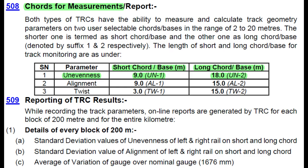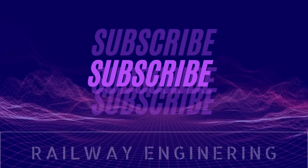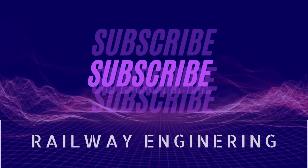But in TRC recording, there are two types of cards for measuring unevenness: short card is 9 meters and long card is 18 meters. Thank you friends for watching this video. If you are interested, kindly subscribe and share with your friends group and ask them to subscribe for more technical and valuable videos. Thank you very much.